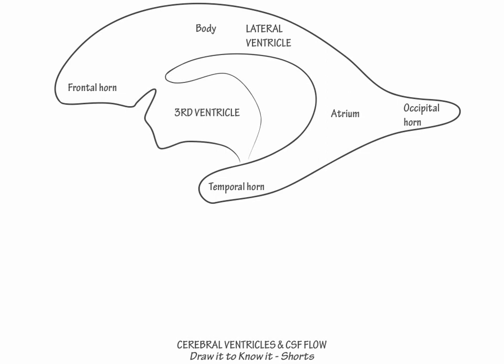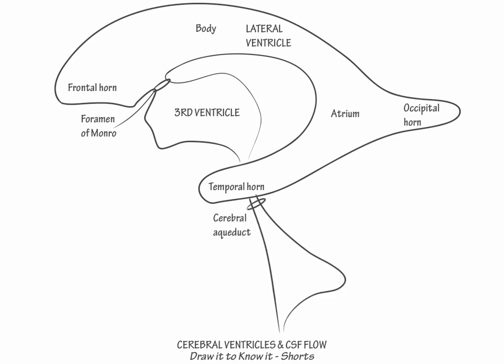Now, show that the lateral ventricles empty into the midline-situated third ventricle through the bilateral foramina of Monroe, and then show that the third ventricle empties into the narrow cerebral aqueduct of Silvius.